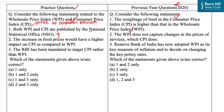The second statement is: the increase in food prices would have a higher impact on CPI as compared to WPI. This statement is correct, as the weightage of food is higher in the Consumer Price Index than in the Wholesale Price Index. So the second statement is correct.